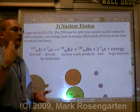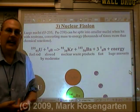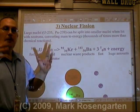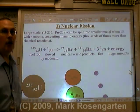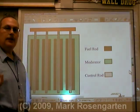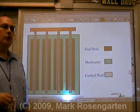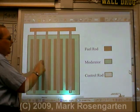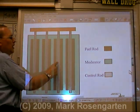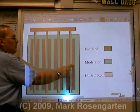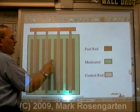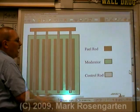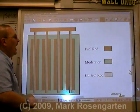They put stuff like boron and cadmium into the control rods to enhance them, strengthen them, raise their melting point, and so on. Here's your basic reactor core diagram: your fuel rods, containing your minimum 3% uranium-235, are immersed in a moderator, usually water.